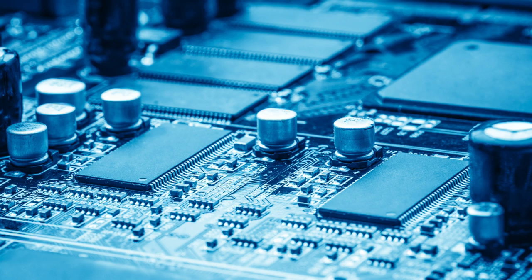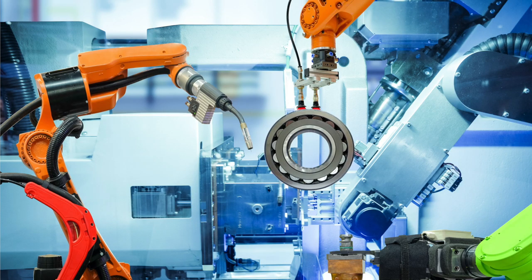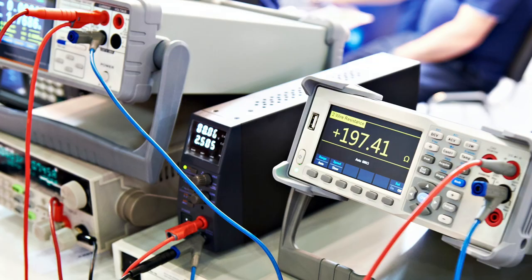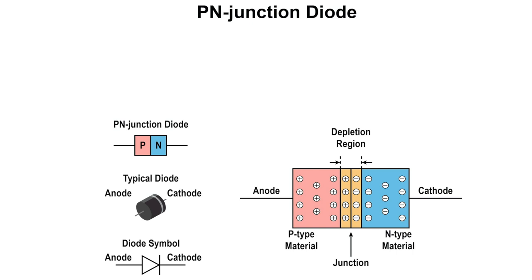Electronic systems and controls have gained wide acceptance in the automation industry. It has also become essential to be familiar with power electronic devices. One of the simplest of semiconductor devices is the PN junction diode. The diode is formed by a doping process, which creates P-type and N-type semiconductor materials on the same component.